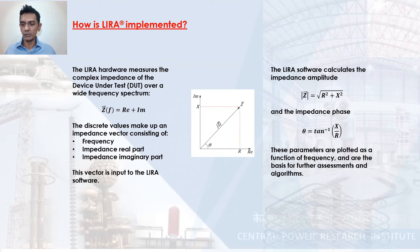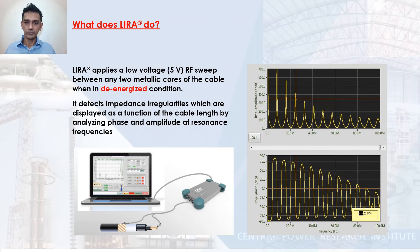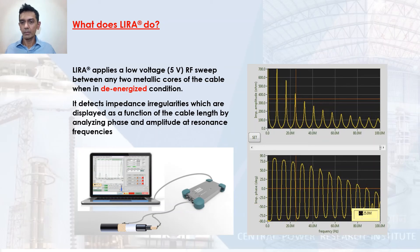The Lyra instrument injects low-voltage, high-frequency signals between the conductor of the cable and the screen. When these signals are injected and resonances occur, you can see on the graph the amplitude and phase signals as a function of frequency, with very high peaks at certain frequencies. These resonant points are used to assess the change in impedance.